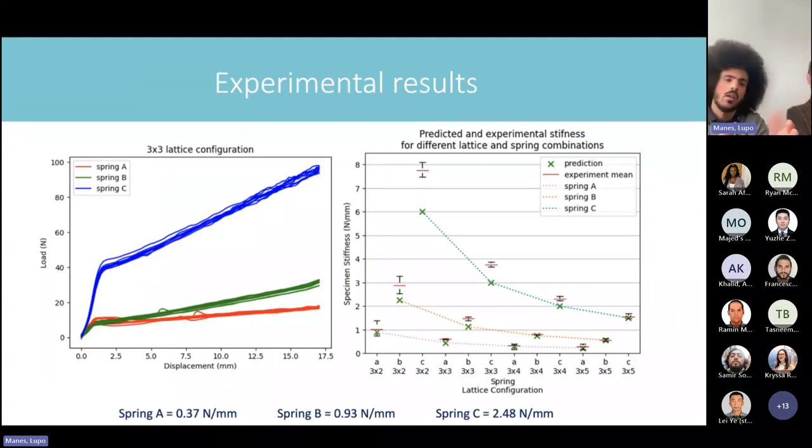The test was carried out by putting them in a universal testing machine so we could get a load displacement curve. Here are some of the results. On the left, you can see the experimental result for a three by three lattice configuration with three different values for springs: 0.37 N/m, 0.93 N/m, and 2.48 N/m. You can clearly see the difference in stiffness. And you can also observe that the stiffness of the entire lattice is linear, which is what we expected.